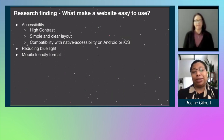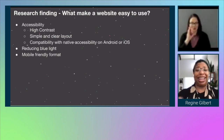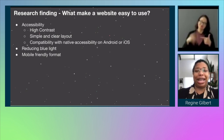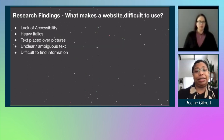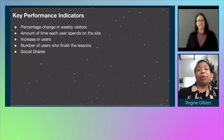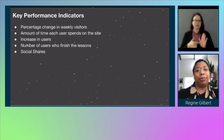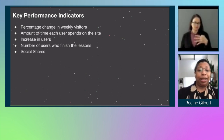Some research findings on what makes a website easy to use: obviously accessibility. High contrast, simple and clear layout, compatibility with native accessibility on Android or iOS, reducing blue light, and mobile-friendly format. Additional findings on what makes a website difficult to use: lack of accessibility, heavy italics, text placed over images, unclear or ambiguous text, and difficult-to-find information. Key performance indicators that may work include the percentage change in weekly visitors, the amount of time each user spends on the site, an increase in users, the number of users who finish the lessons, and social shares.